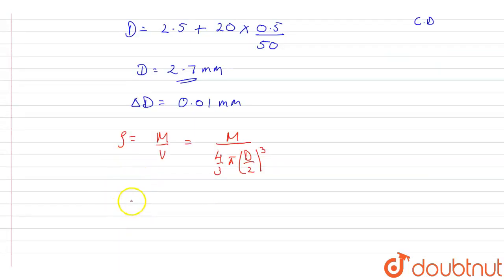So from here the formula for percentage error of relative density will be equal to delta rho upon rho multiplied by 100. This is percentage error.